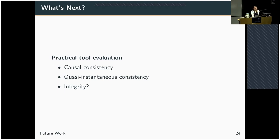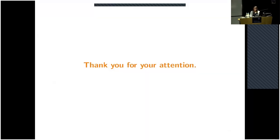This was the main set of definitions we thought about. Of course, having worked in this abstract theoretical realm for a while, it would be interesting to move back to the real world. As future work, we would like to perform practical tool evaluations with the two consistency definitions — causal consistency and quasi-instantaneous consistency — and maybe have another look at integrity, as prior investigations into this could potentially be improved. Thank you for your attention, and I'm happy to take questions.